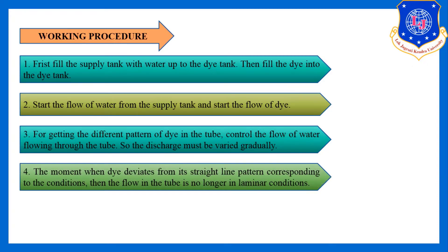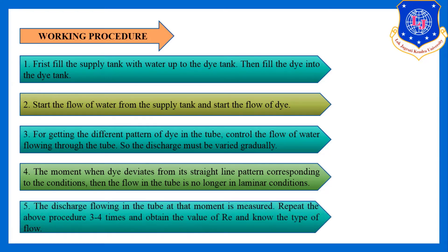When the velocity of water flow is low, the dye flows nearly straight. When we increase the flow rate, the dye deviates from the straight-line pattern. At each change, measure the discharge flowing through the tube. Repeat this procedure 3–4 times to obtain different values of NRe and identify the type of flow.